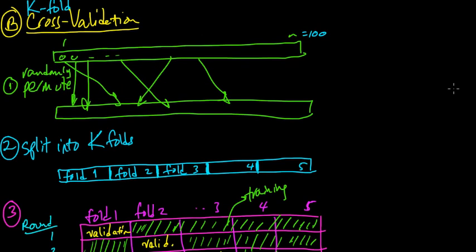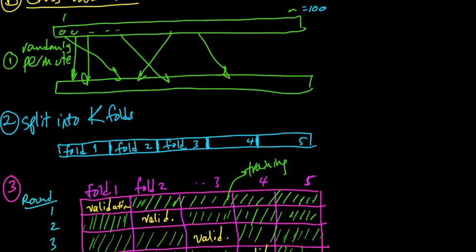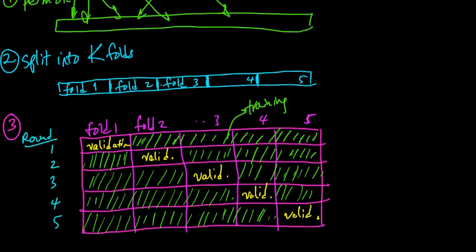We're going to do it in the following way. We took our data D, and for illustration purposes, let's suppose we had 100 points. We randomly permuted it, split it into k equally sized parts or roughly equally sized parts. Here we're assuming k equals 5 for illustration, to make things nice and concrete, but in general this could be some arbitrary integer k.